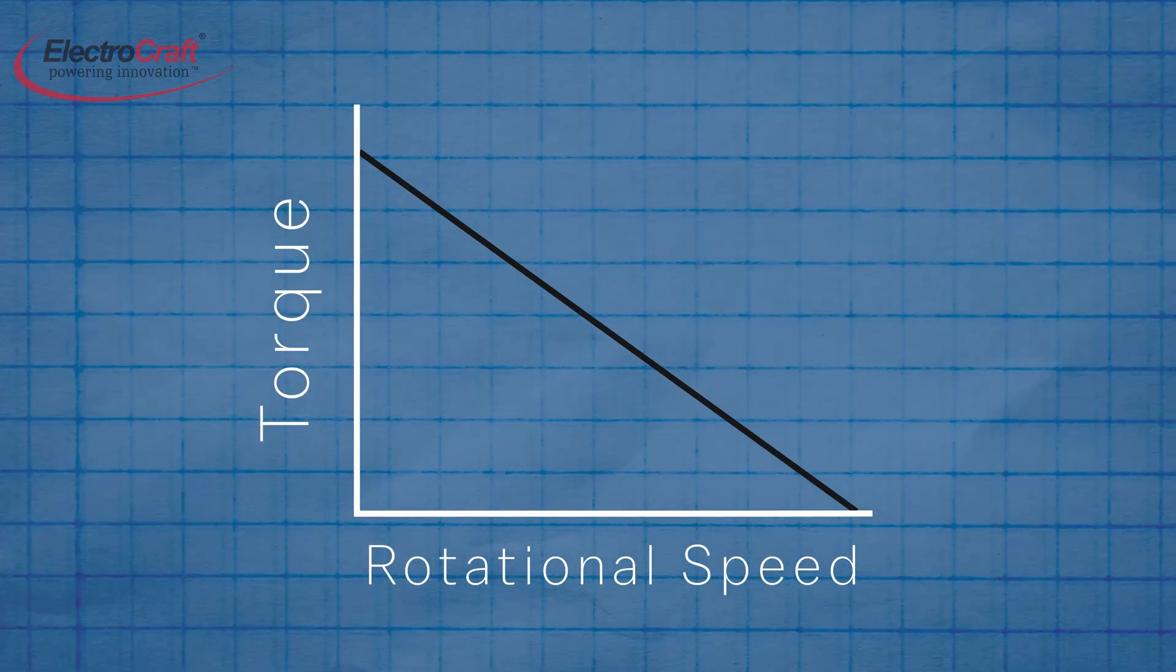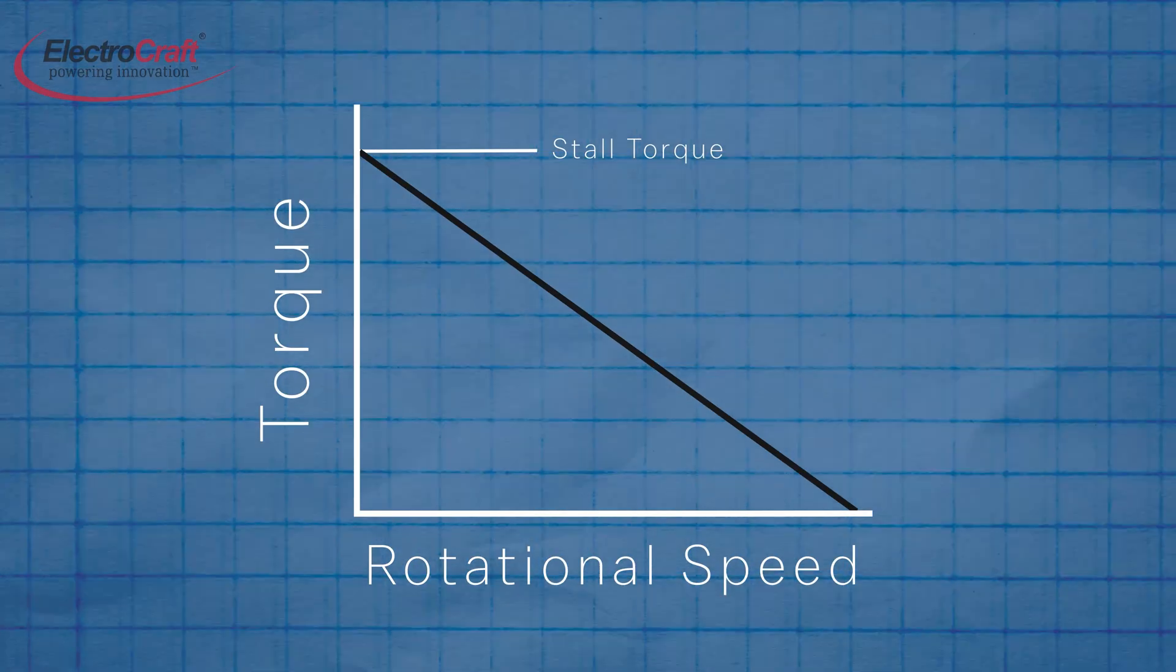This is why a DC motor's torque speed is a descending line with a negative slope. The torque speed curve begins at the Y axis, crossing where the speed is zero. This is the stall torque, the maximum torque when the motor is running at nominal voltage.